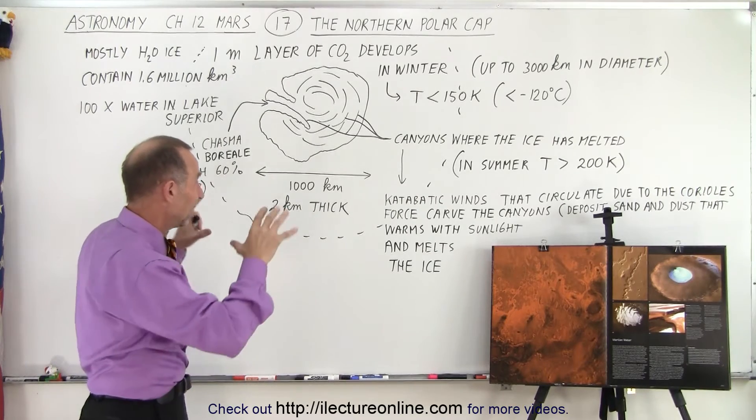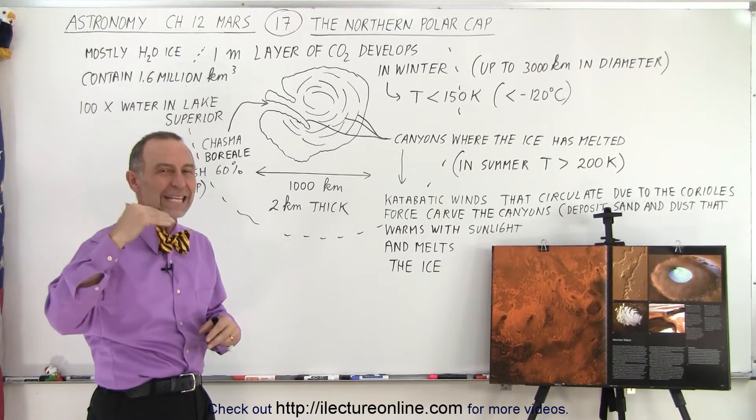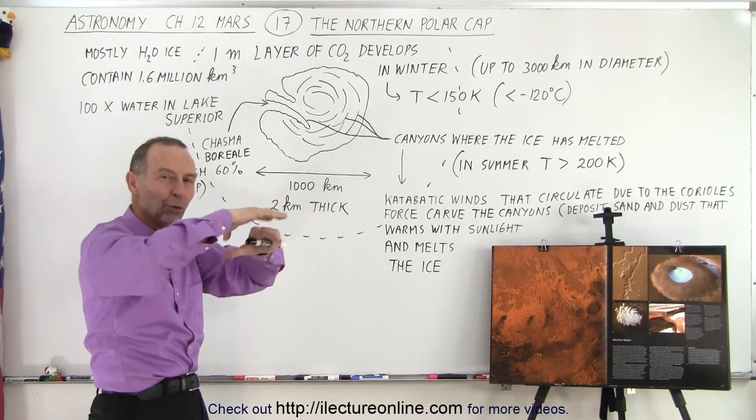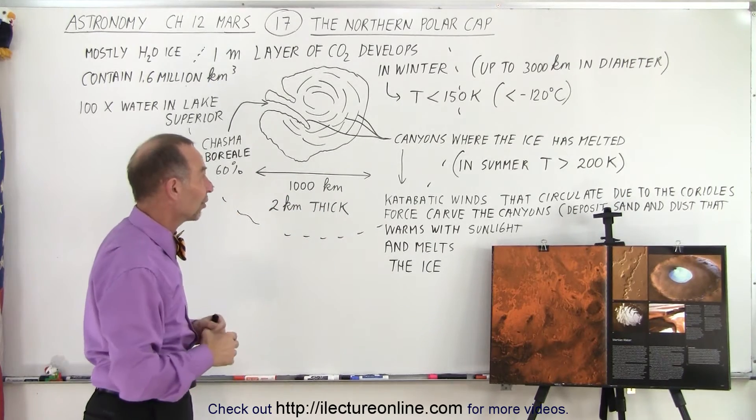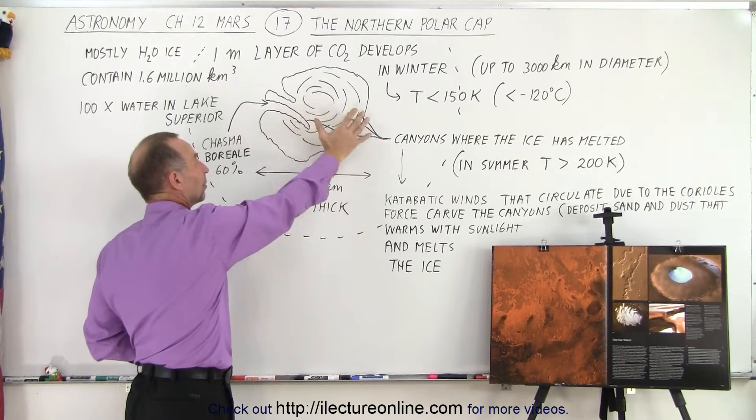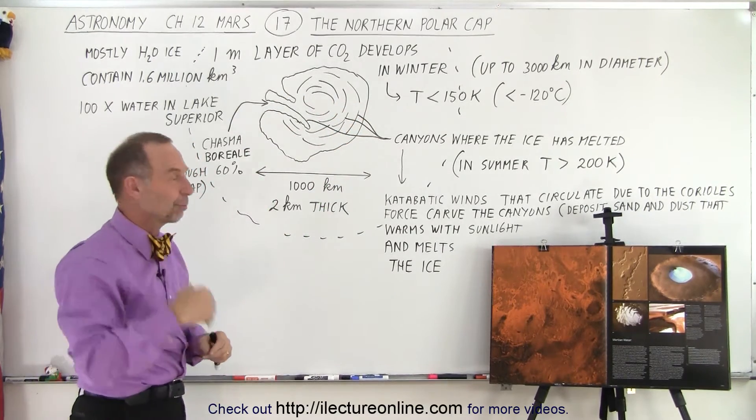Carbon dioxide which freezes at minus 80 degrees Celsius comes in the form of snow and covers the northern part of the planet in the northern hemisphere wintertime. It gets so thick, up to a meter thick on the polar cap in wintertime, and then it sublimates back into the atmosphere when spring comes.